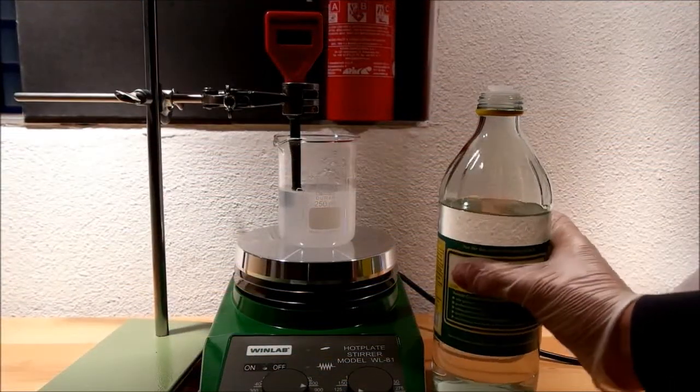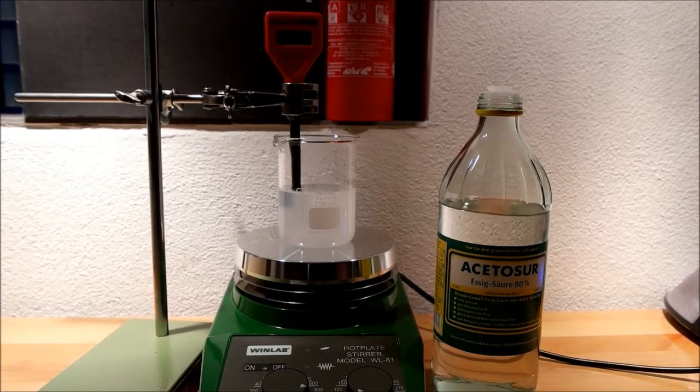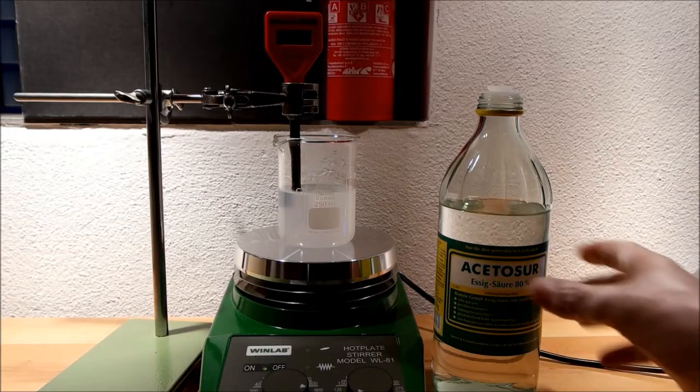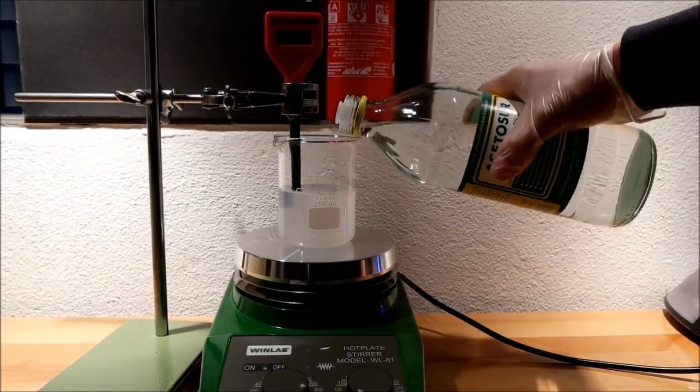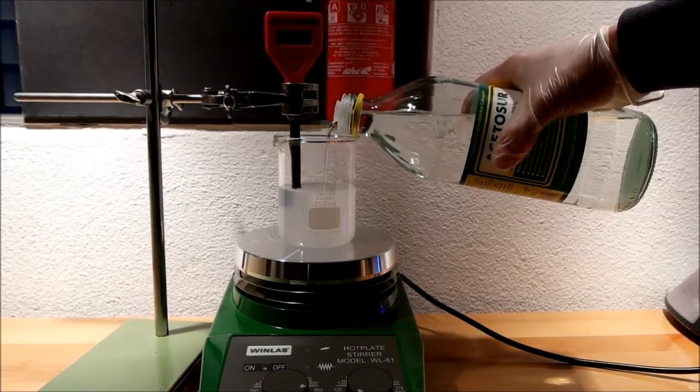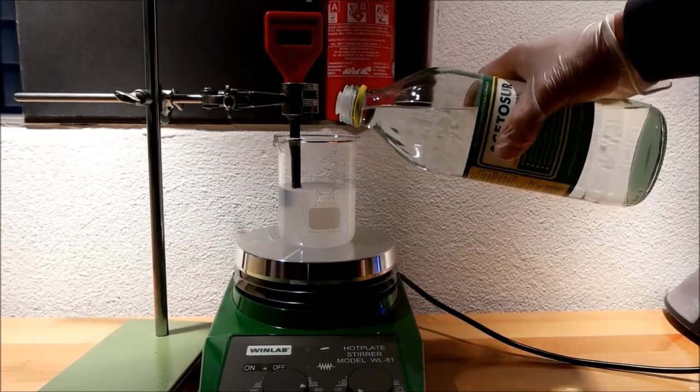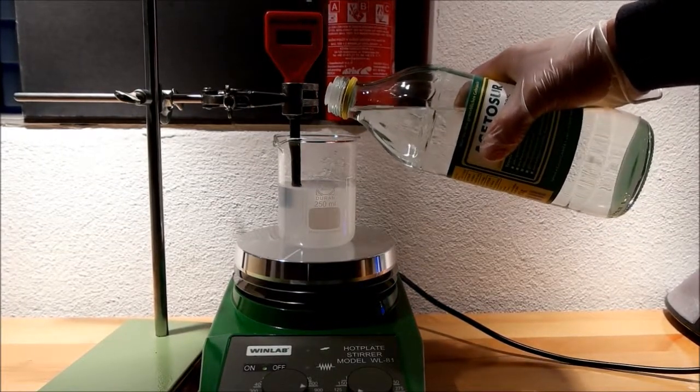When you've finished make sure not to pour that solution in your drain or it will destroy your pipes. You can adjust the solution to a pH of 7 which is neutral by adding an acid. When the solution is very alkaline it can be corrosive on your pipes and finally destroy them.